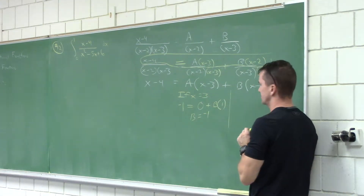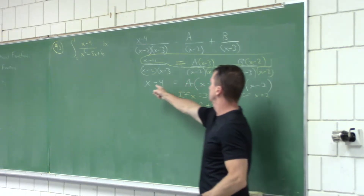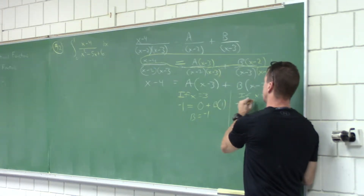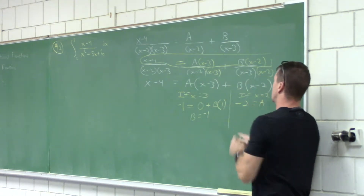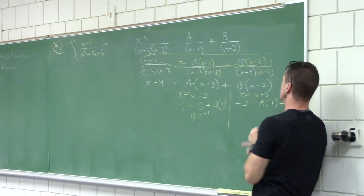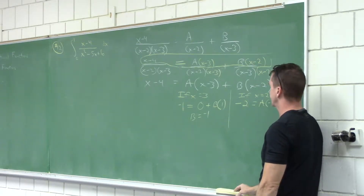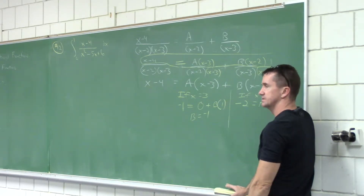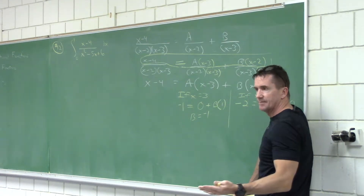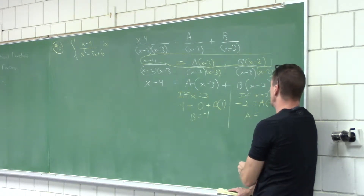Now what's the other substitution? If x equals 2: 2 minus 4 is negative 2. Equals A times — 2 minus 3 is negative 1. Plus, what's that turn into? 2. A is just 2.